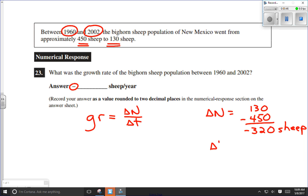Our delta T change in time frame is just going to be 2002 minus 1960, which is 42 years. So our unit for the answer is going to be sheep per year, which is exactly the unit they've got written right here, so we know we're on the right track.